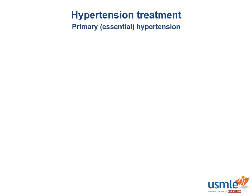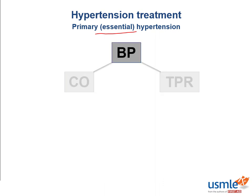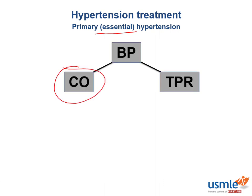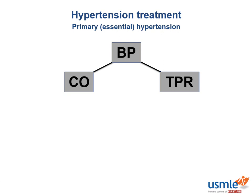Primary hypertension is also known as essential hypertension. Even though the exact pathophysiology of the disease is not completely understood, we can still make a therapeutic regimen by changing two factors that determine the blood pressure, which are cardiac output and total peripheral resistance. All of the drugs we're going to talk about in this video change either cardiac output or vascular resistance, and some have an effect on both.